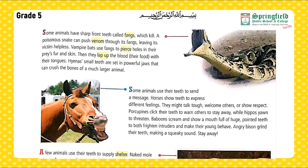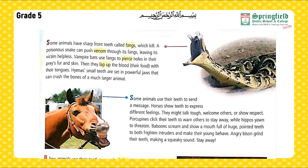Some animals use their teeth to send a message. Horses show their teeth to express different feelings — they might talk tough, welcome others, or show respect. Porcupines click their teeth to warn others to stay away. Hippos yawn to threaten. Baboons scream and show a mouthful of huge pointed teeth to both frighten intruders and make their young behave. Angry bison grind their teeth, making a squeaky sound that means 'stay away.'